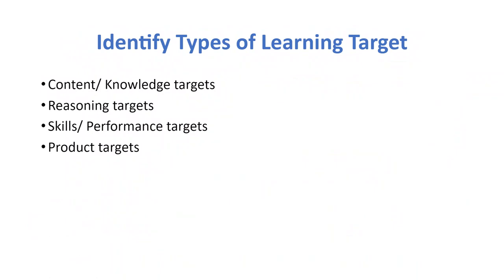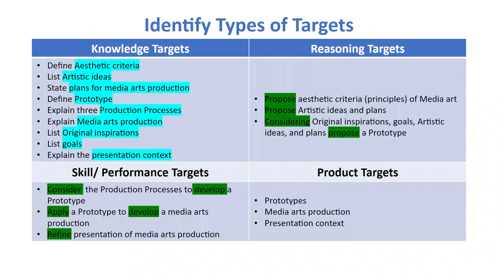I identify types of learning targets: knowledge targets, reasoning targets, skills and performing targets, and product targets. I connect the learning targets with the standards. For knowledge targets: define aesthetic criteria, list artistic ideas, state plans for media arts production, define prototype, explain three production processes, explain media arts production, list original inspirations, list goals, and explain the presentation context.